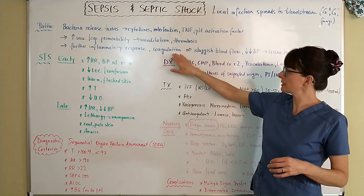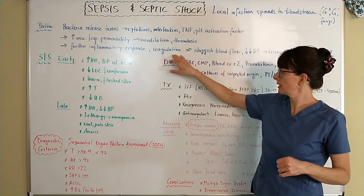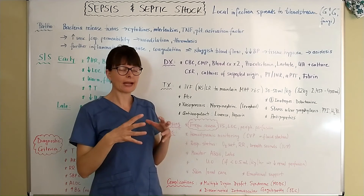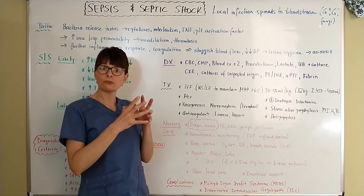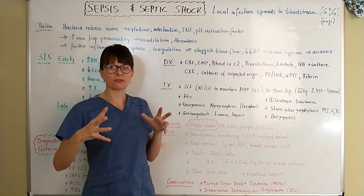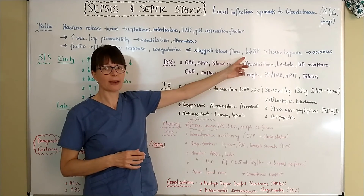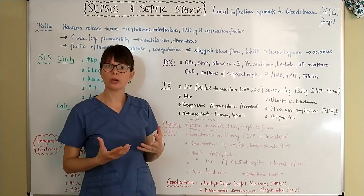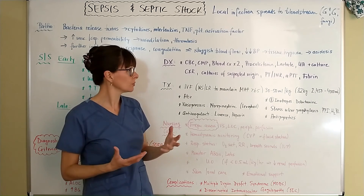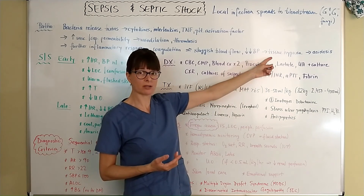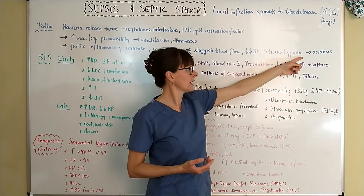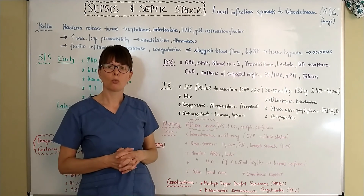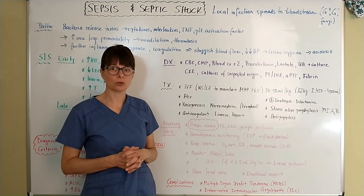Because of platelet aggregation, coagulation occurs, causing sluggish blood flow as the fluid leaks out of the blood vessels, which leads to massive hypotension. When there is low blood pressure, certain organs are not getting perfused, leading to tissue hypoxia, and then acidosis follows. Patients who are septic many times will be in metabolic acidosis.